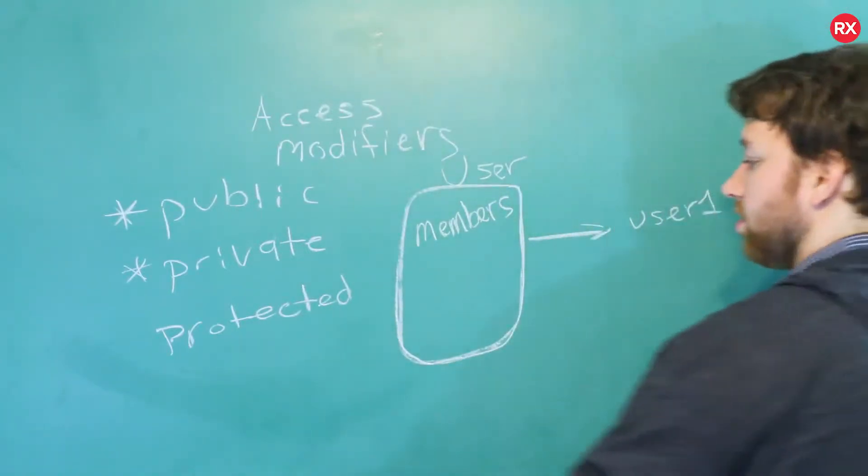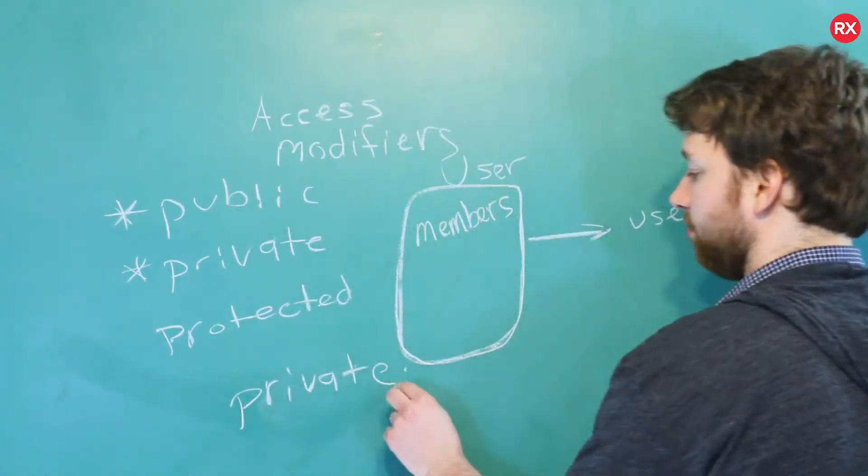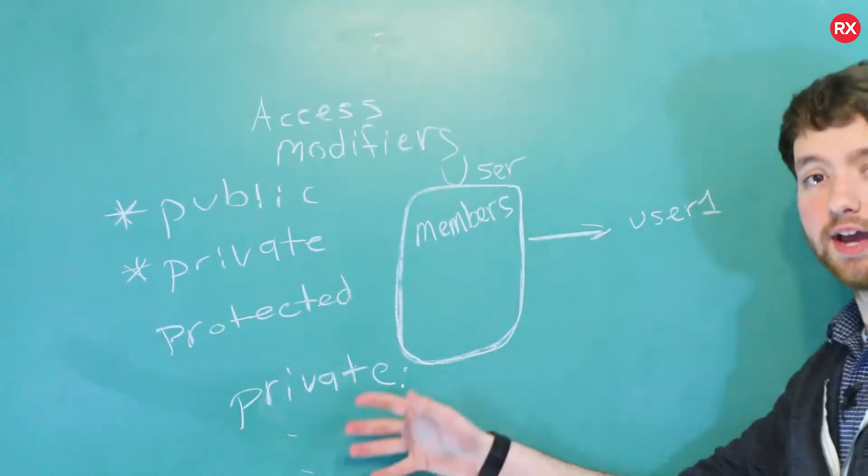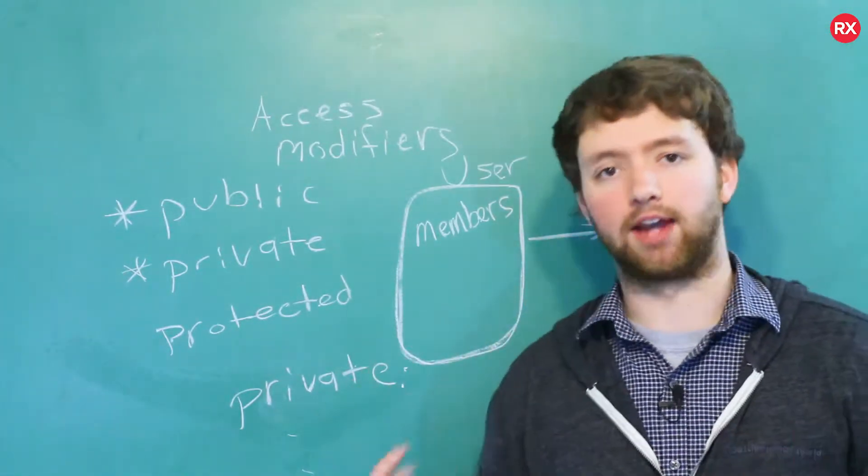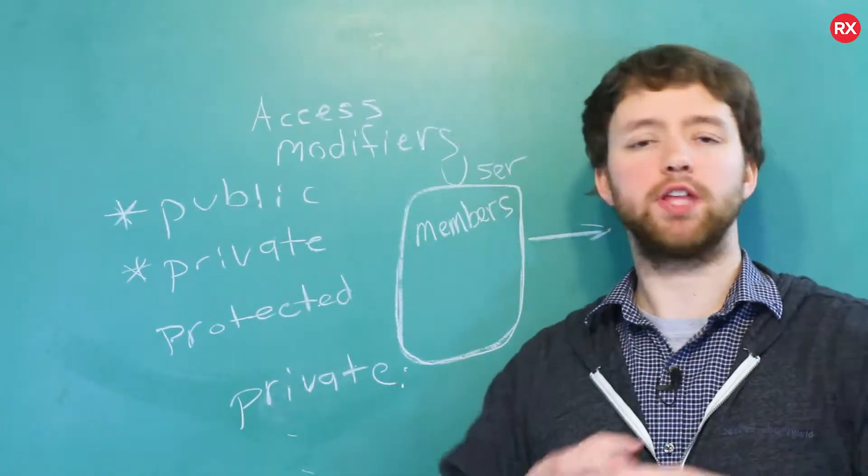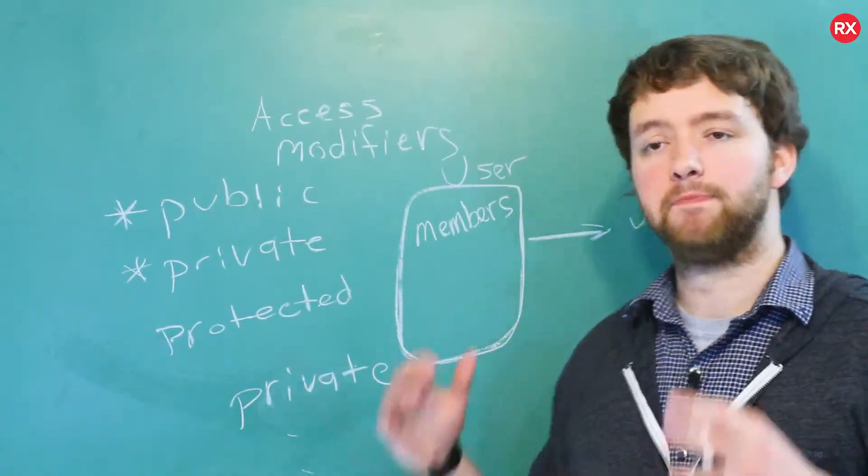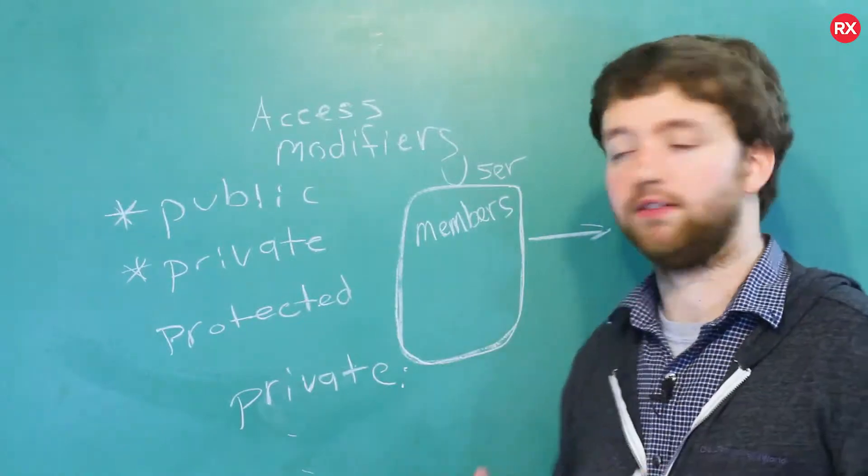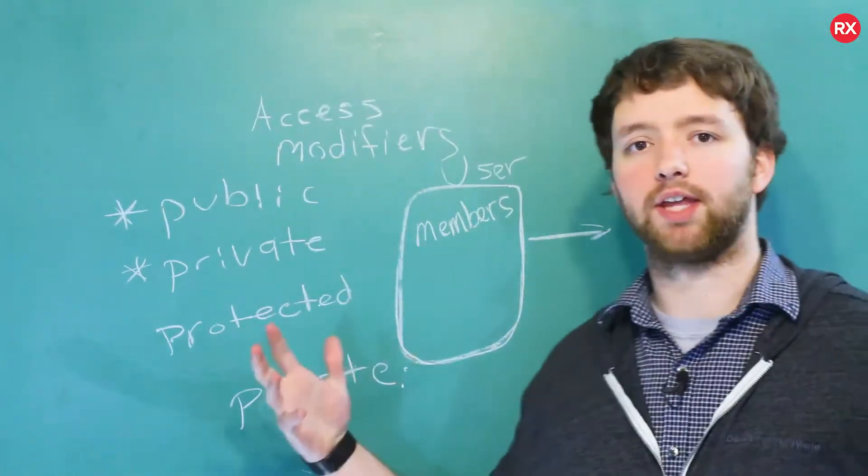And then anything inside the class that comes after that private will have the private access modifier. So I'm pretty sure that is the only difference you have to worry about. Classes are by default private, structs are by default public. That's it. Other than that, everything is exactly the same.